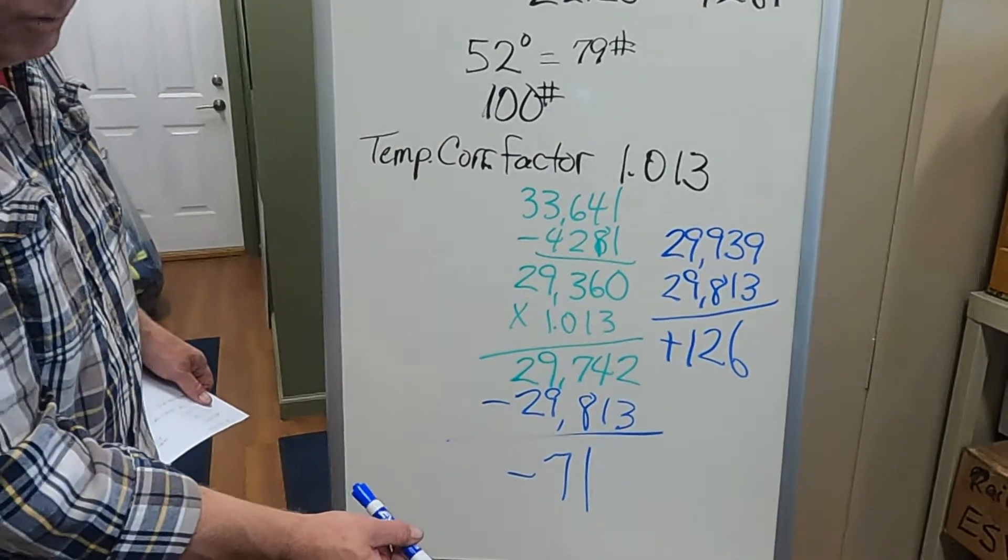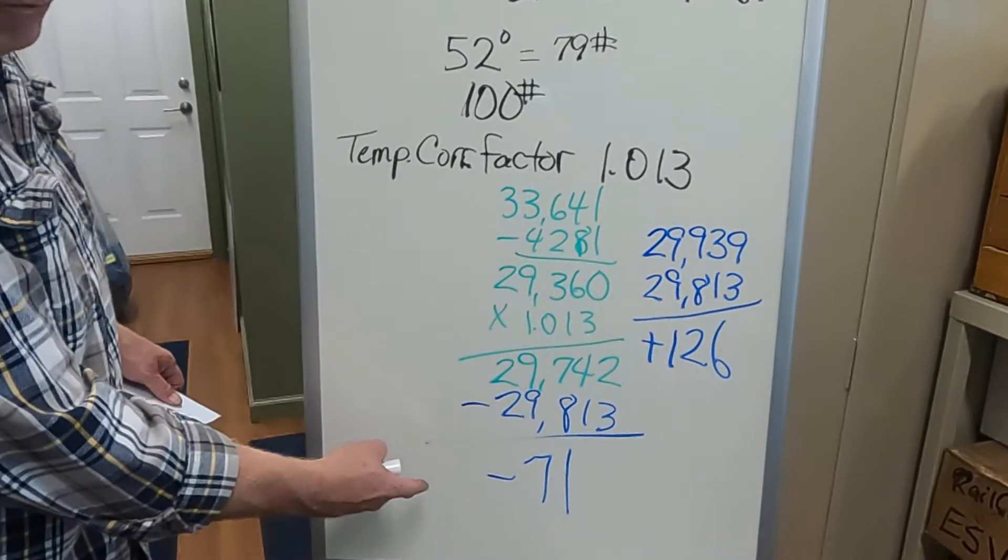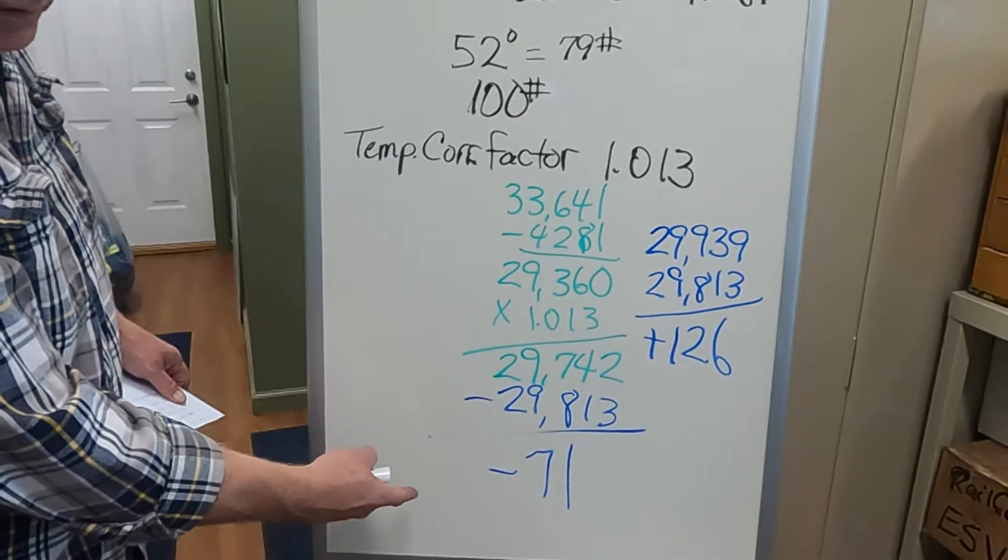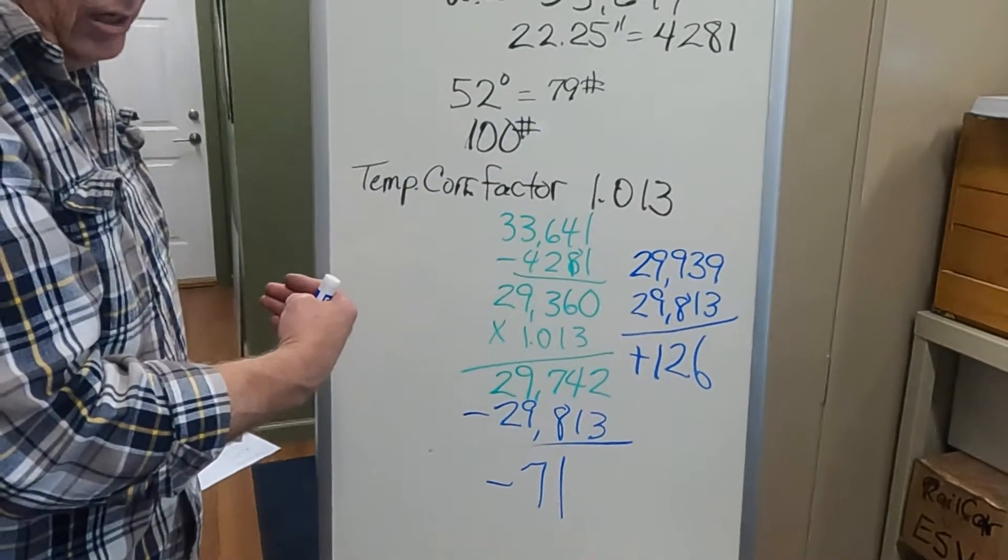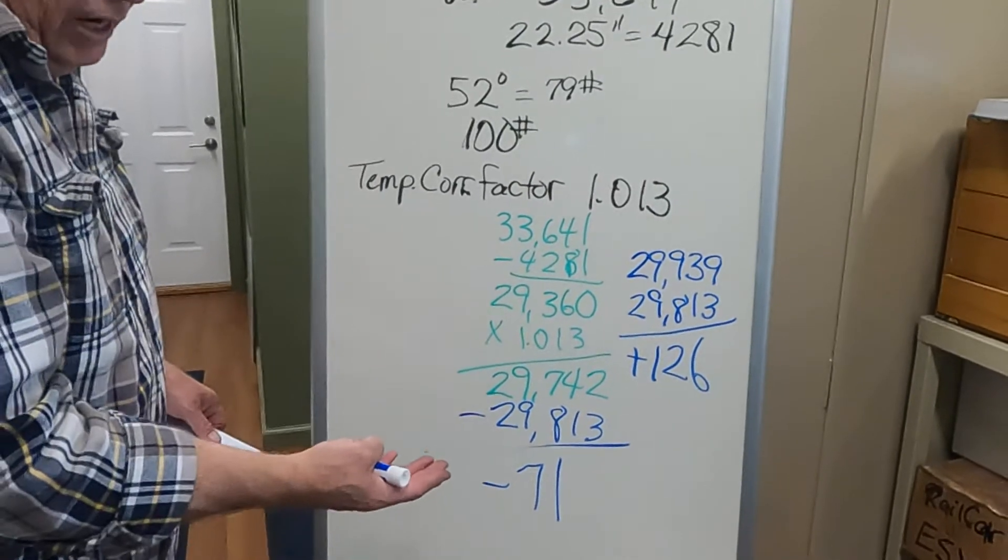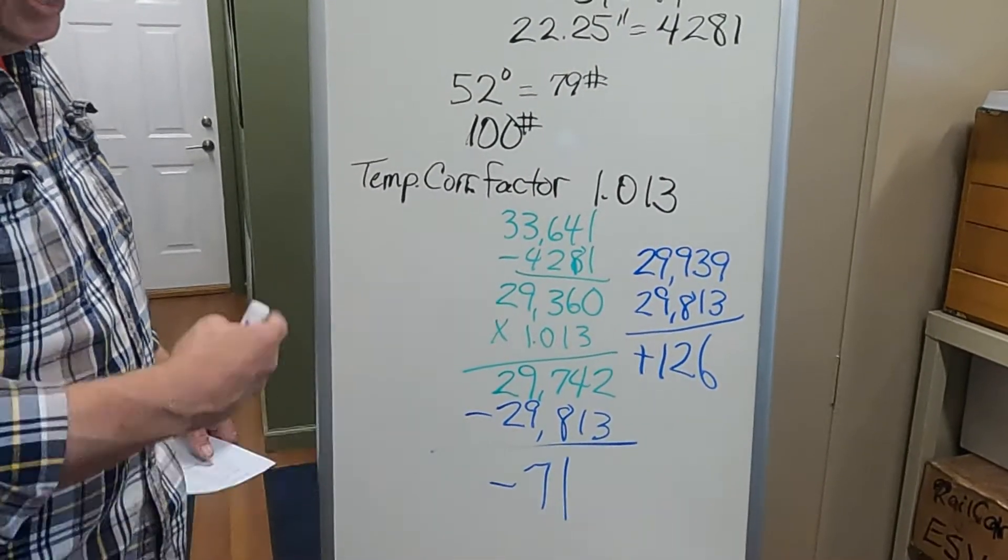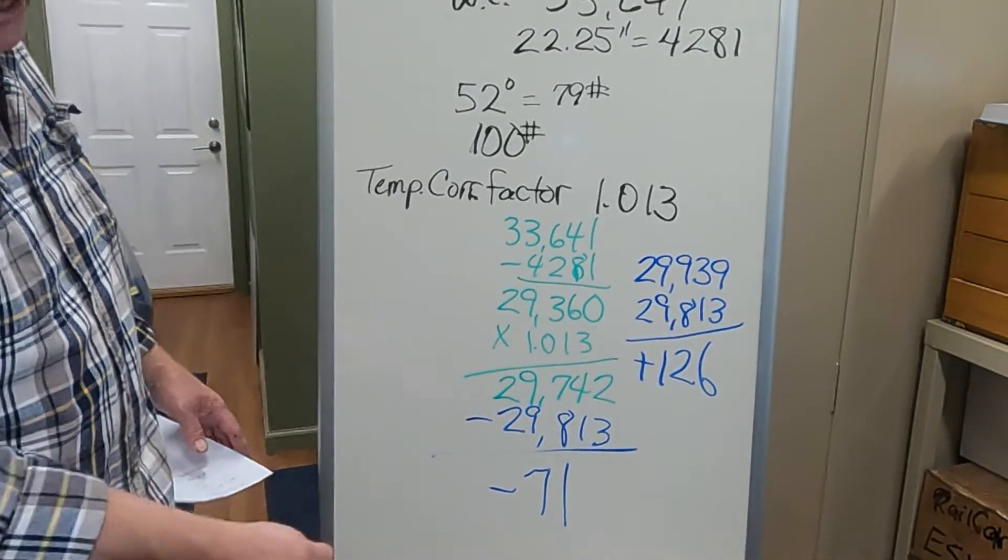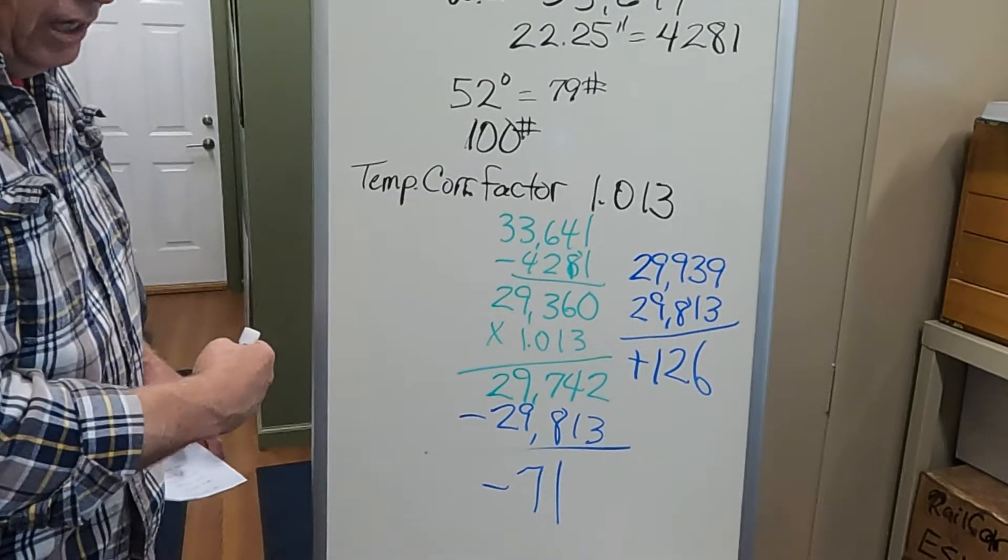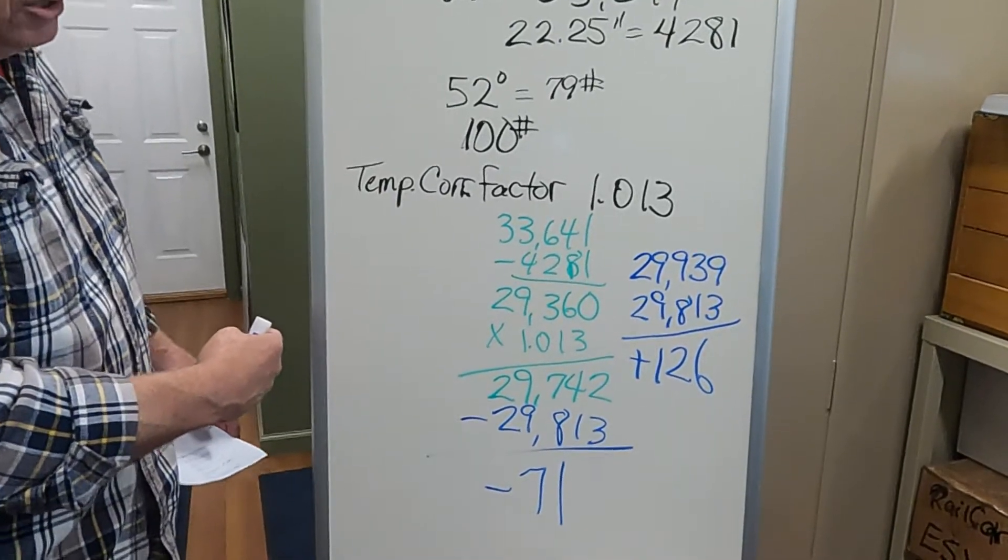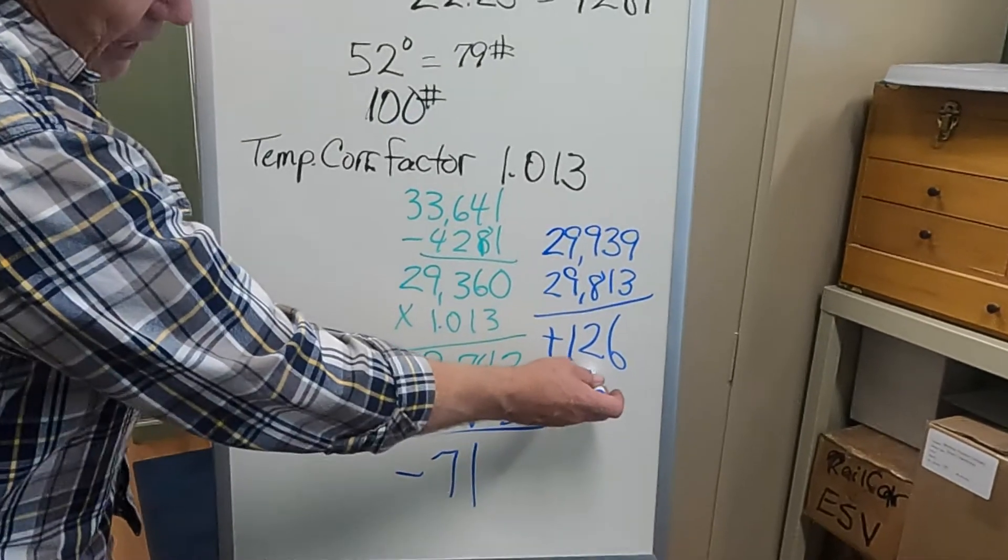I have had cars come in. The worst car I can remember coming in was short 1,740 gallons. Going the other way, I had one car come in, and it was overfilled around 800 gallons. Needless to say, I reported both of them. When you got into excess swinging one way or the other, you document it, and you report it.